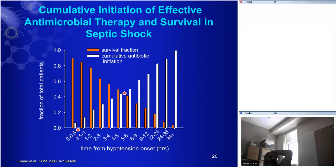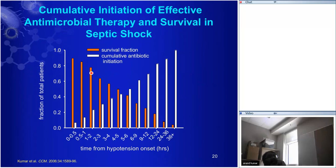If you got your appropriate antimicrobials on board in 30 minutes — only about 5% of patients did it that fast — your survival could be as high as 90%. In the next half hour, we got to about 12% of patients who had received therapy, with 84% survival. Thereafter, for every hour delay out to six hours, projected survival dropped by about 7.5% per hour. If you remember activated protein C — that gave us a 6% absolute improvement in survival at a cost of $10,000 a course. If you can just shorten your antimicrobial time by an hour, you can get more than that amount of survival improvement.